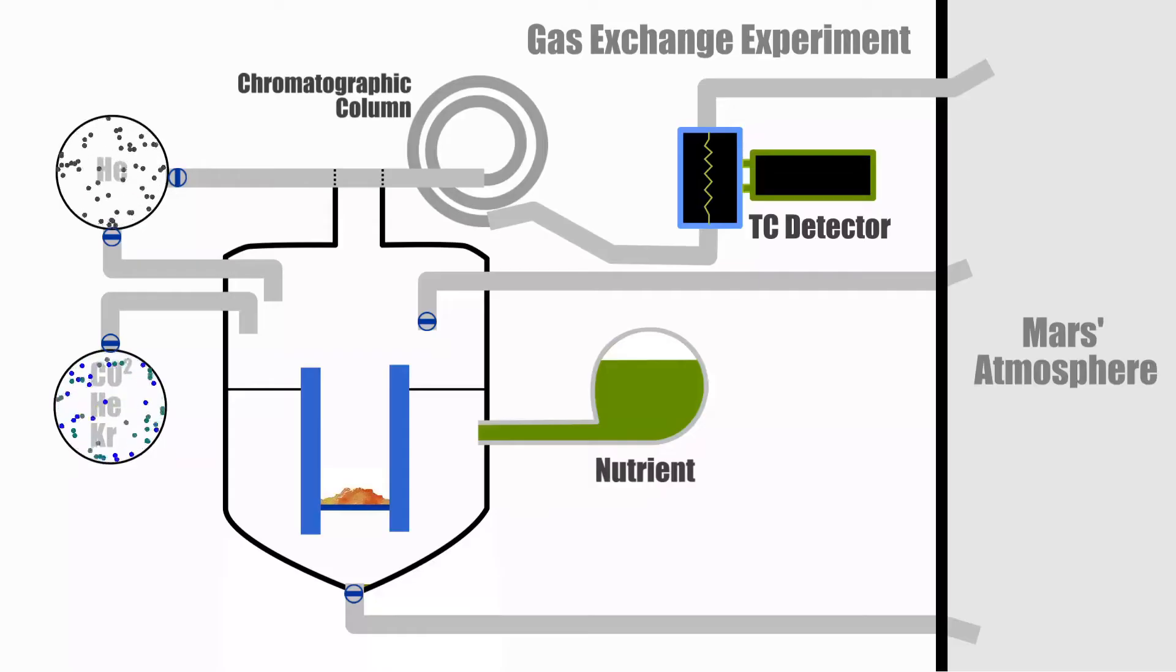Soil is added to the incubation chamber. The air is purged and the chamber is filled with a mixture of helium and CO2. The helium is used to increase the pressure inside the chamber without increasing the concentration of CO2. A rich nutrient solution is added below the soil sample in just the right amount to come into contact with it.